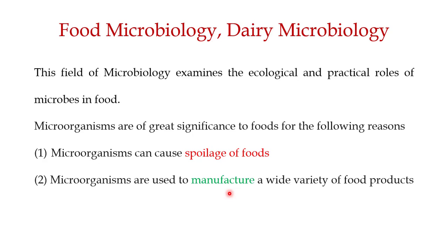Secondly, these microorganisms are very important for manufacturing a wide variety of food products for human beings. For example, they are important in the production of yogurt, bread, beer, and wine. If we understand the physiology of these microorganisms, we will be in a better position to use them for the benefit of human beings.